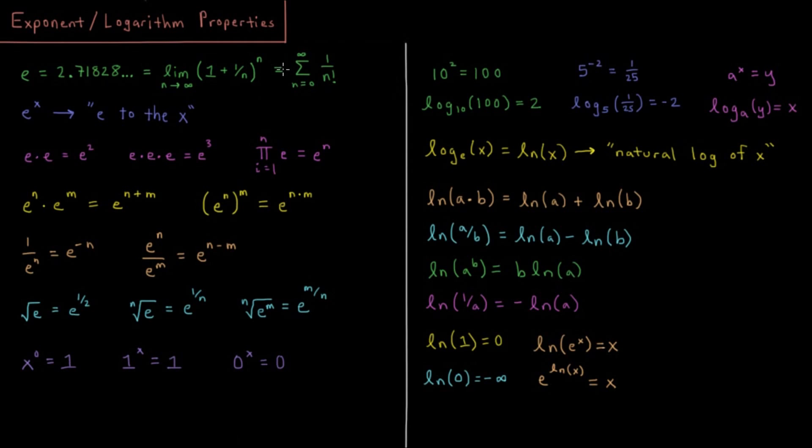Or you could express it as the Taylor series of the sum from n equals 0 to infinity of 1 over n factorial, where factorial is you take a number and you multiply it by itself and the lower number, lower number, all the way until you get down to 1. And the factorial of 0 is defined to be 1 as well.